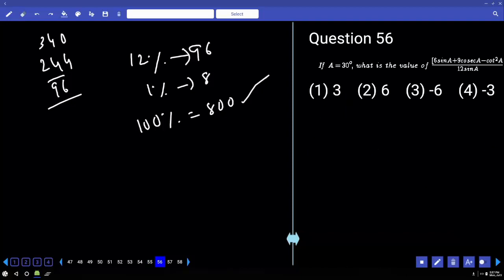If a equal to 30 degrees, what is the value of so-and-so? So, sine 30, 1 by 2, 6 into 1 by 2, I mean 3. 9 into cosine 30, 2, minus cot square 30. Cot 30 is root 3. Its square is 3. By 12 sin A, 6. 3 and 3 cancel. Answer 3.